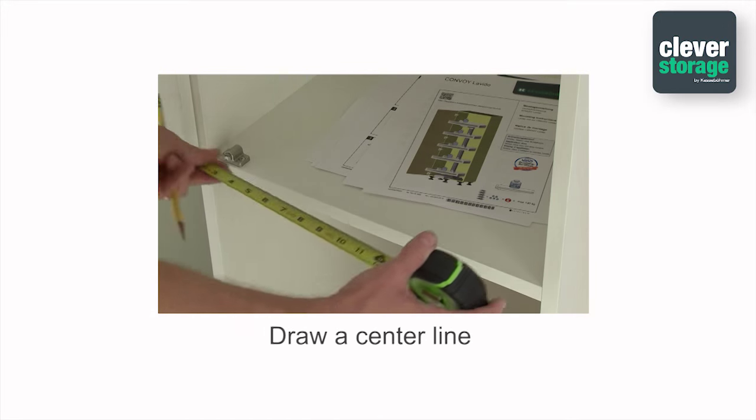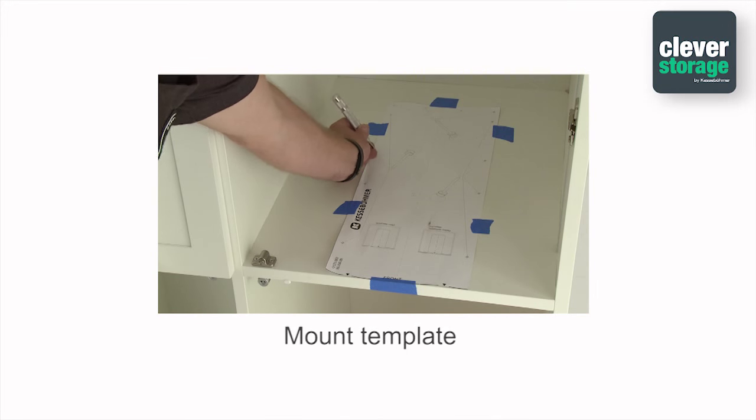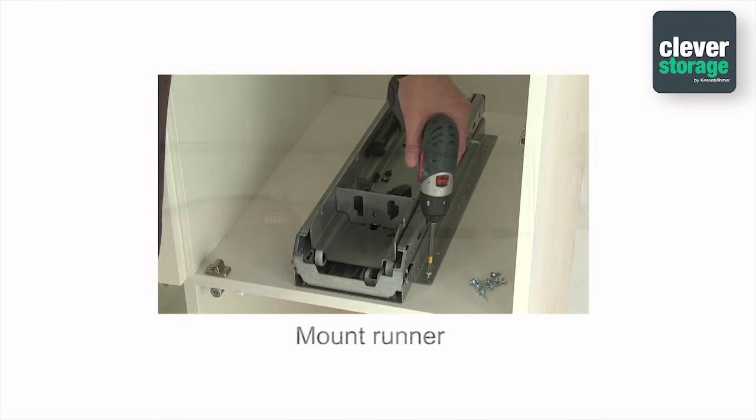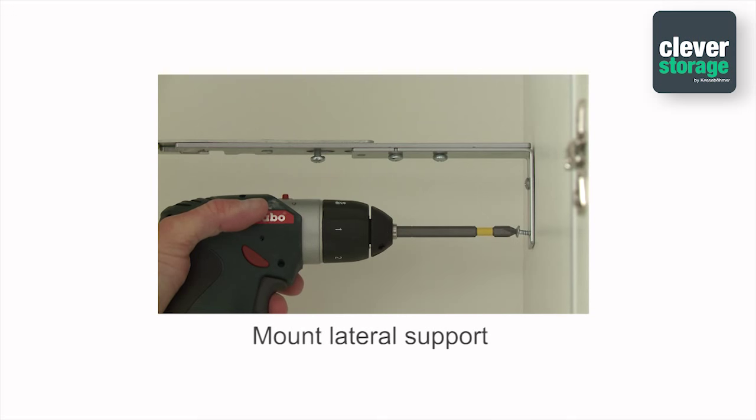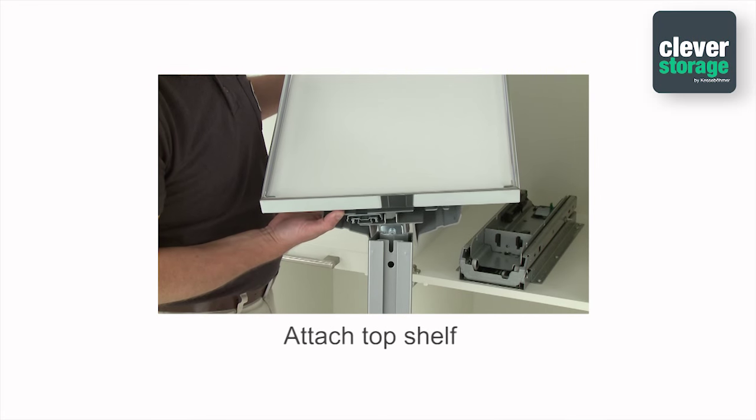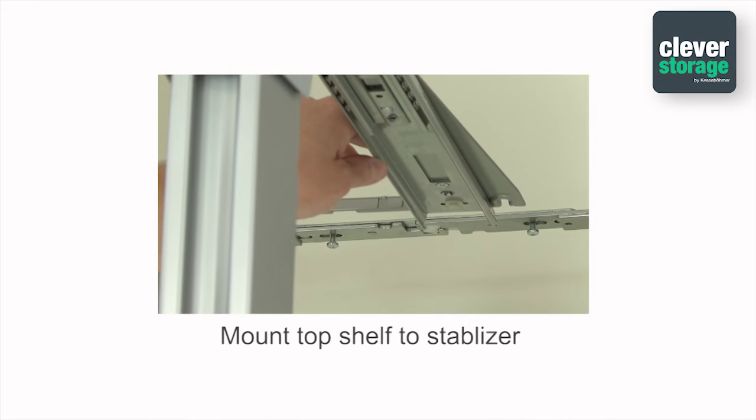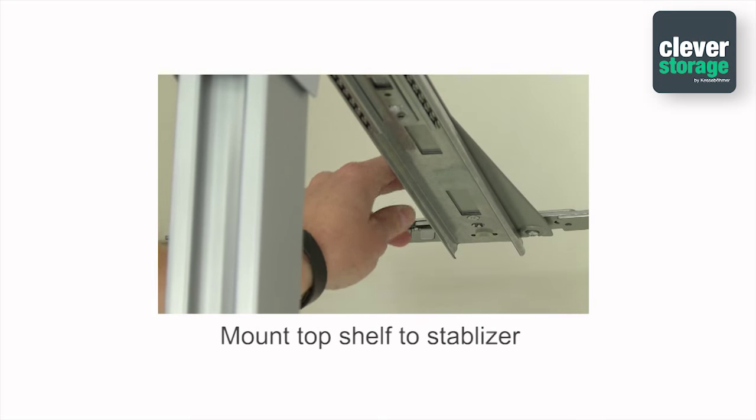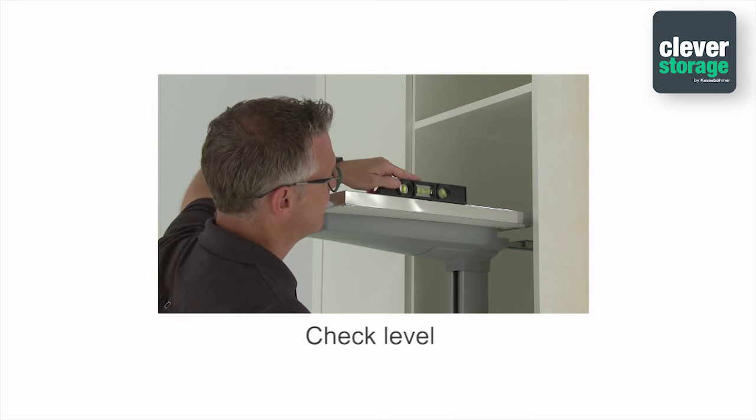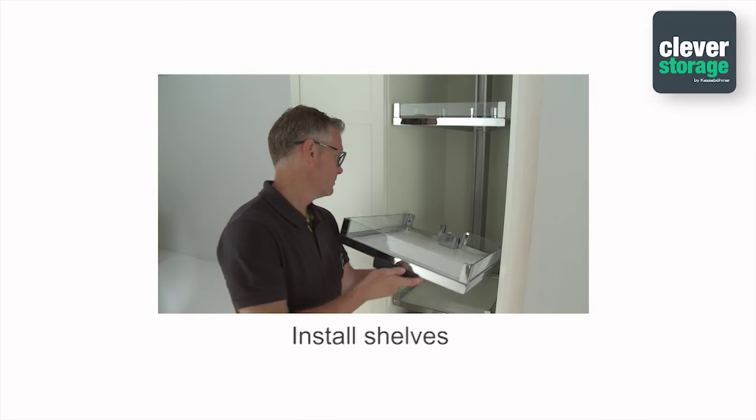To recap: draw a center line on the floor of the cabinet, mount the template and mark the holes, drill pilot holes and then mount the runner to the floor, measure and mount the lateral support bar wall to wall, attach the top shelf to the vertical frame, mount the frame to the runner, slide the top shelf onto the stabilizer bar and tighten, check to make sure the top shelf is level and adjust if necessary, assemble the shelves, install the shelves.